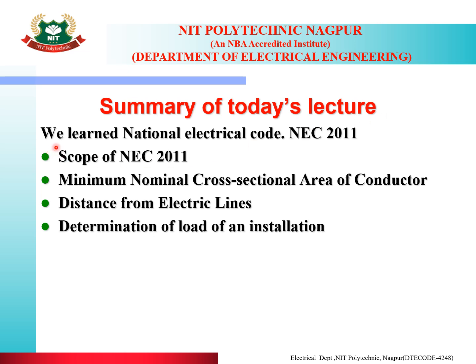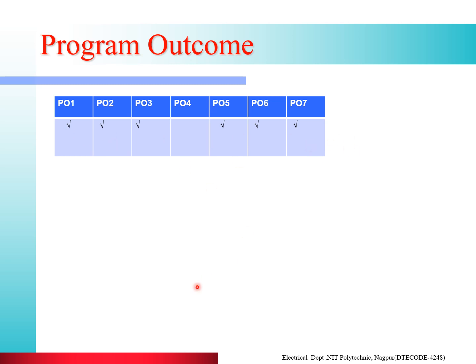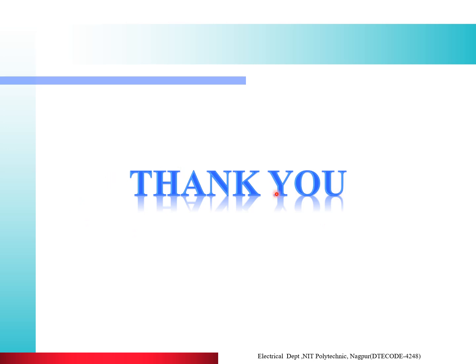In summary, today's lecture covered the National Electric Code NEC 2011, including: the scope of NEC 2011; the minimum nominal cross-sectional area of conductors for aluminum and copper for particular applications; the distance of electric lines showing vertical and horizontal clearance for high voltage, low voltage, and extra high voltage lines; and the determination of the load of an installation, where if specifications are not known, loads are assumed as per the NEC table. Thank you very much for listening to the lecture on the National Electric Code and happy e-learning.